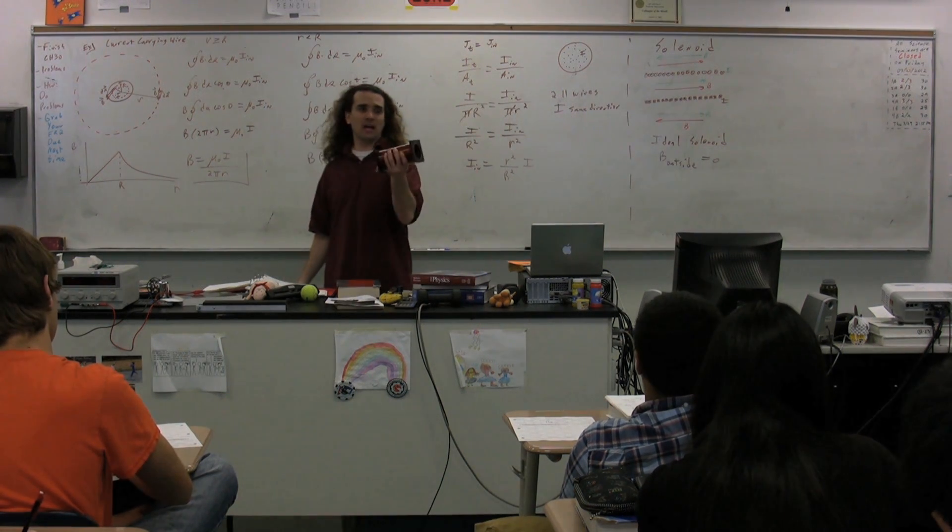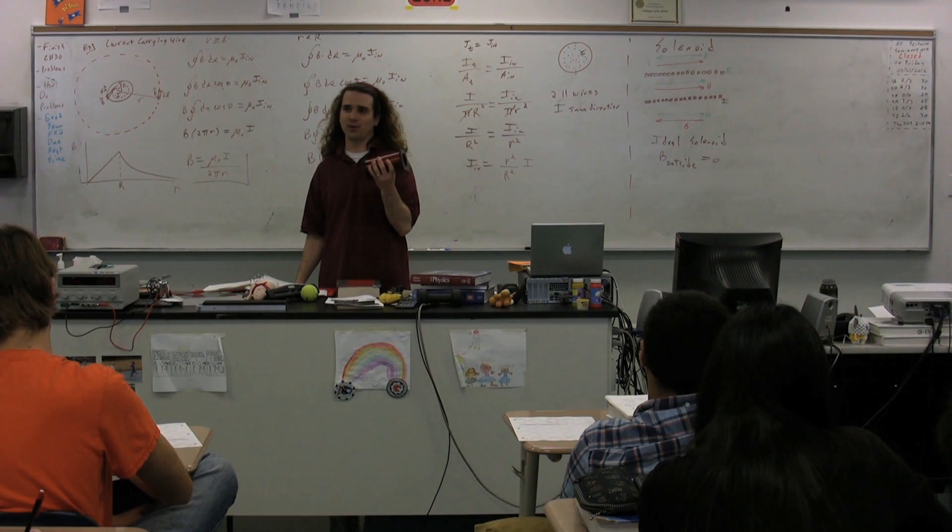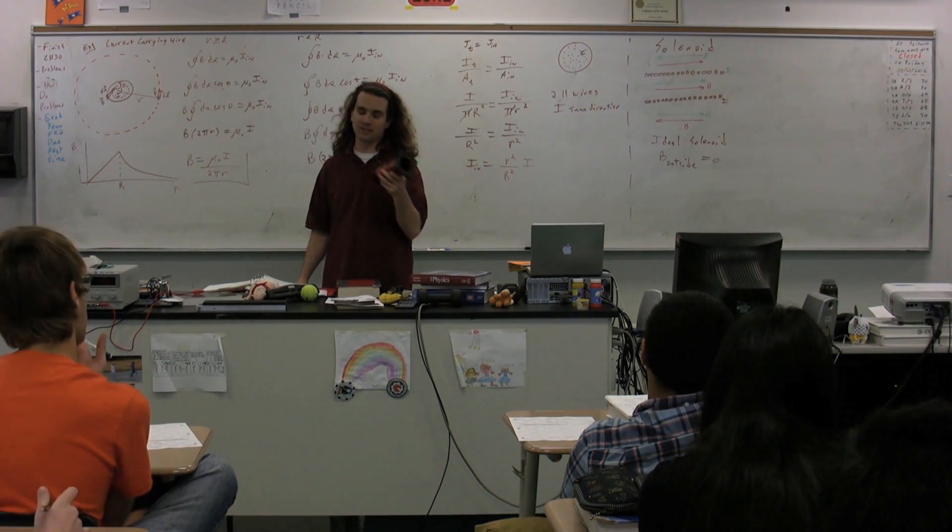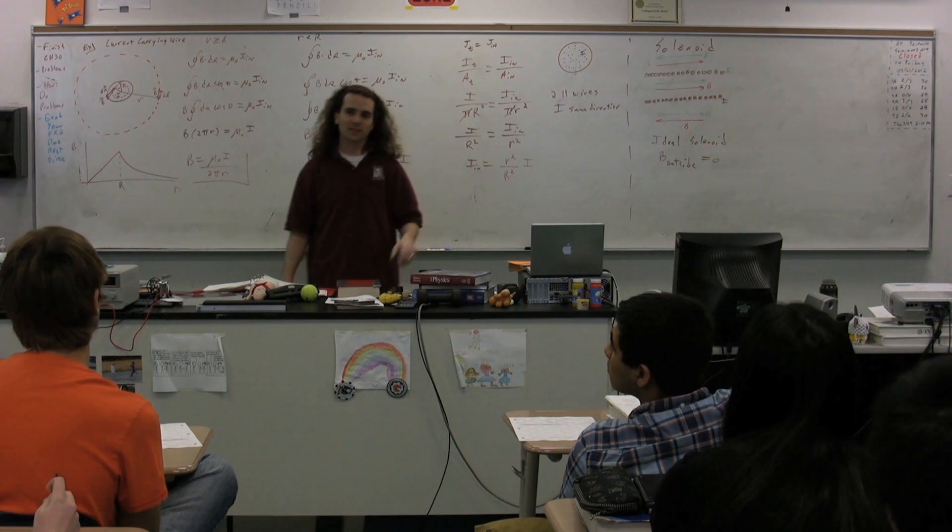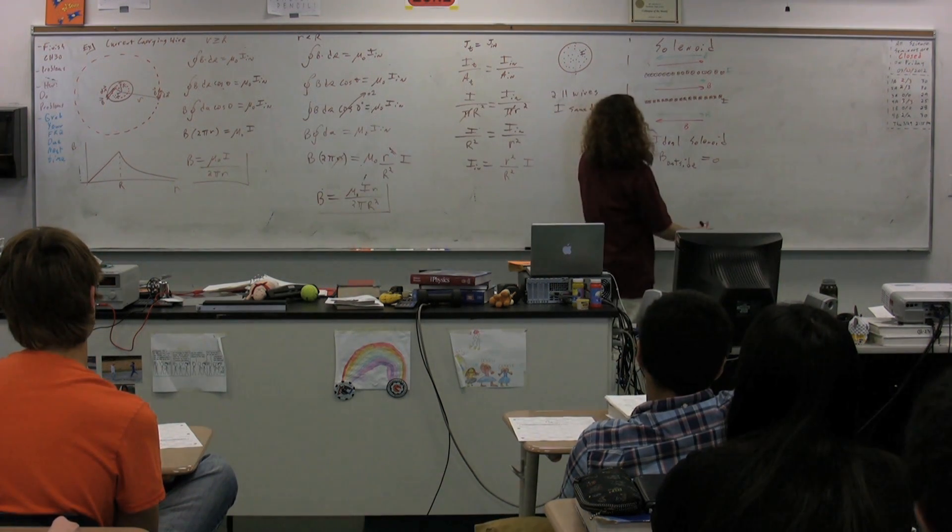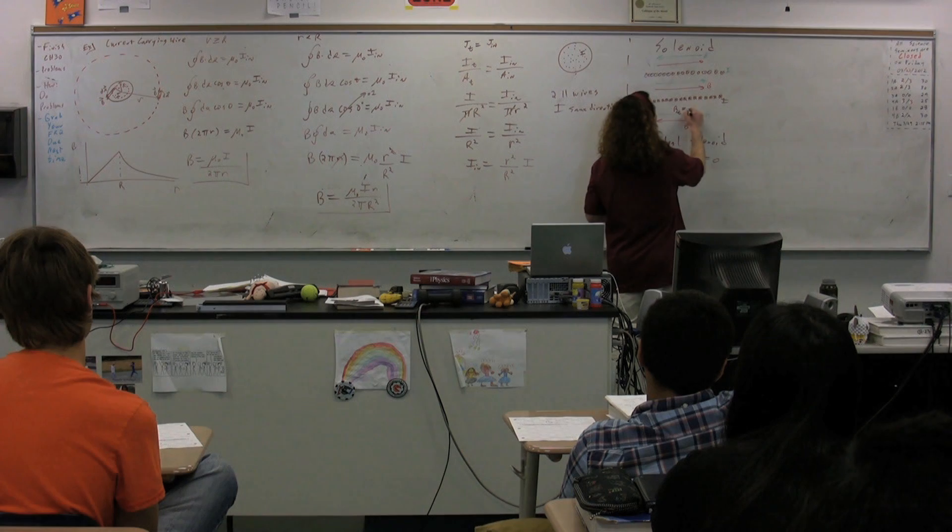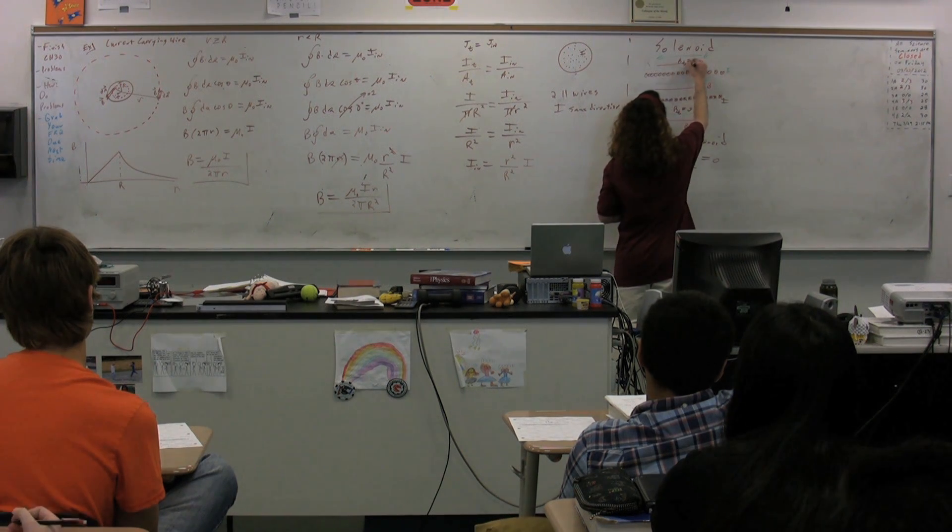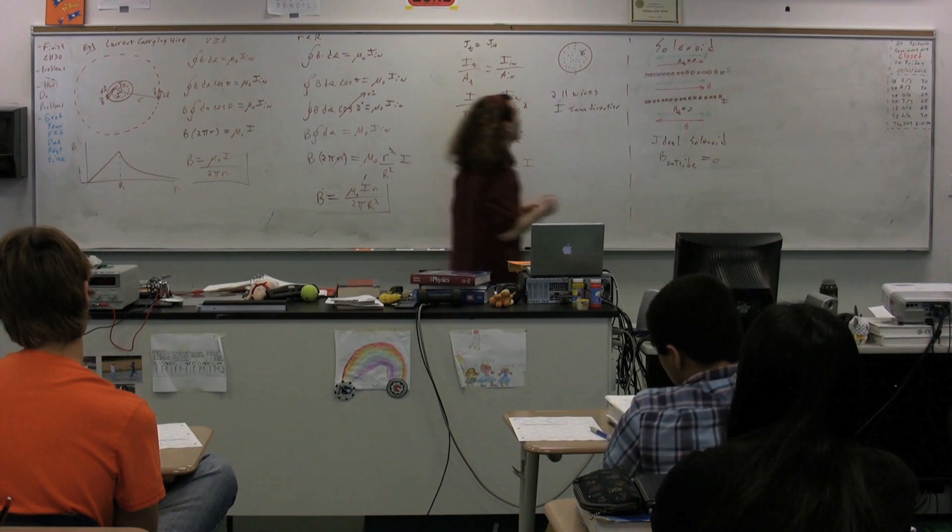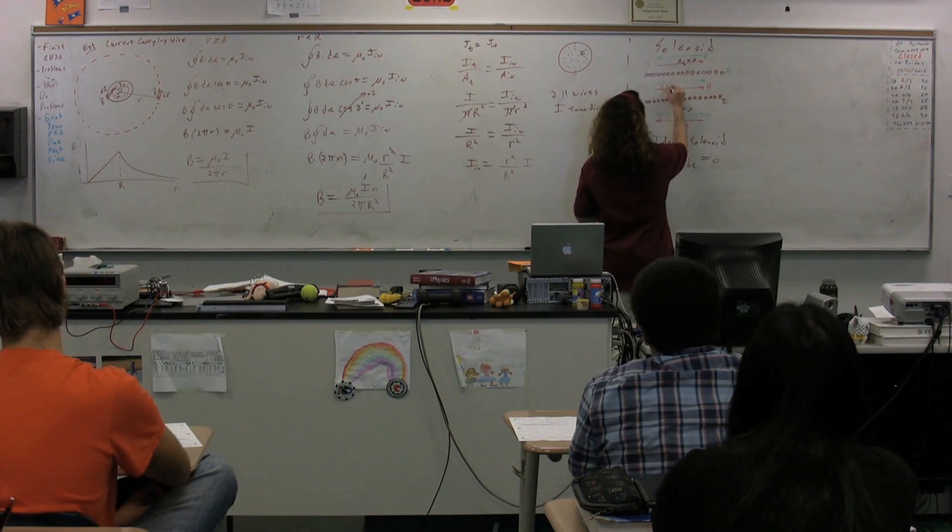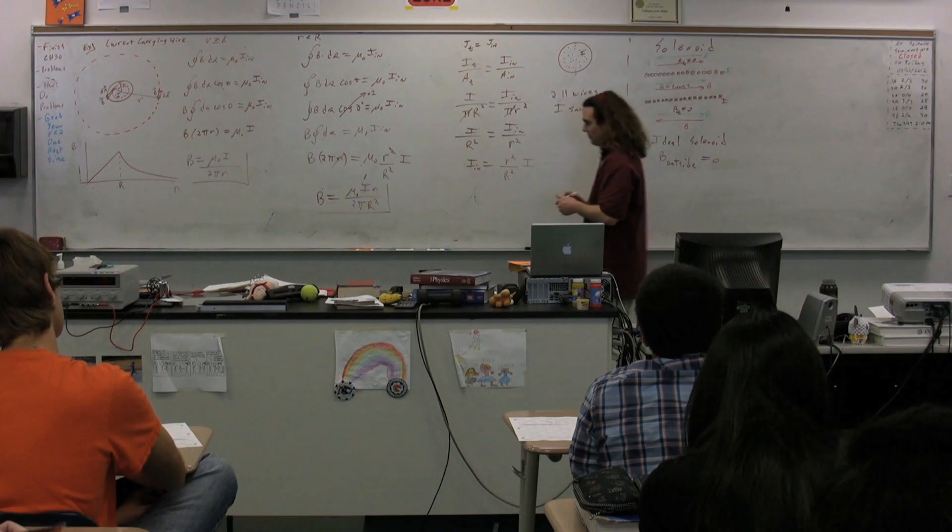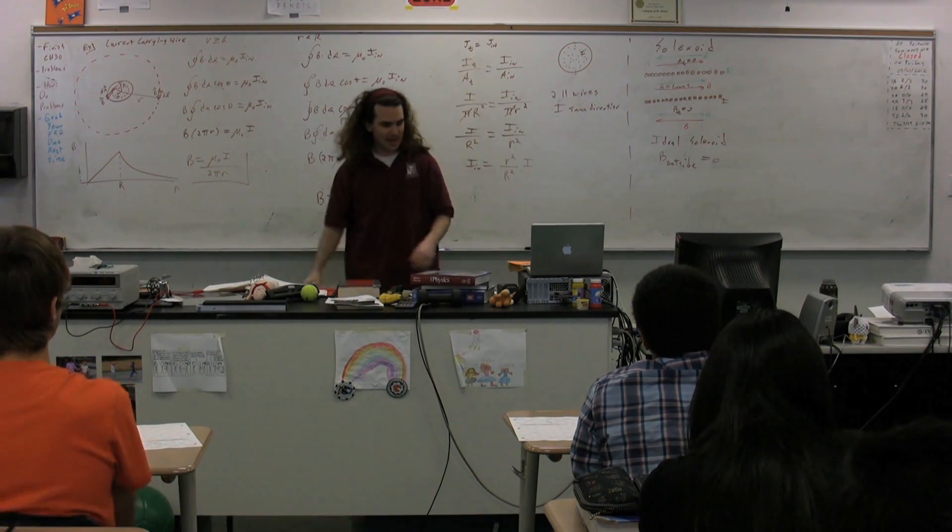This, just so you know, is an ideal solenoid, or at least we're going to treat it to be one. And you will be able to do experiments to prove that it's actually not, when we get to the next chapter. The magnetic field is only on the inside of the solenoid and is a constant magnetic field. And we are going to figure out the value of that magnetic field.